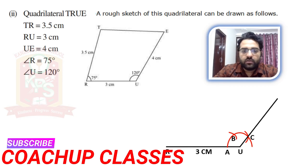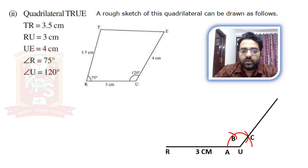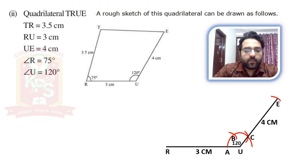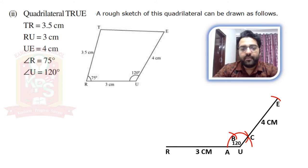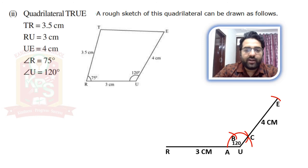Next, EU = 4 cm. Place the compass at U and draw an arc 4 cm away from U — this point is E, and EU is 4 cm. Next, at point R, we will construct a 75-degree angle. To construct 75 degrees, note that 75 degrees comes between 60 and 90. So first we will make a 60-degree angle, then a 90-degree angle, and after that we will bisect the angle between 60 and 90, which gives 75 degrees.